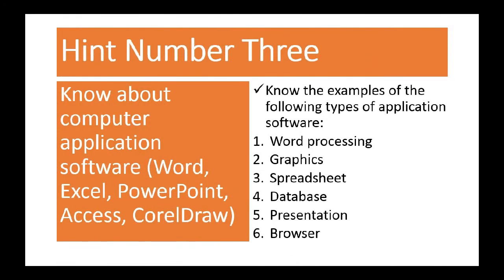Another hint: you must know the examples of the following types of application software — word processing, graphics, spreadsheets, database, presentation, and browser. These six software types will have questions on them in alternatives to practical. Try to know their examples because questions come out on them every year. If you can get five to ten examples under each of those applications, it will be easier to answer related questions.